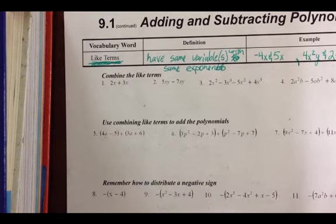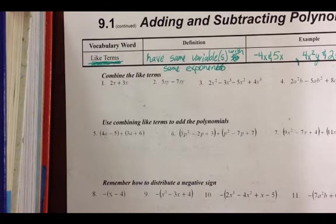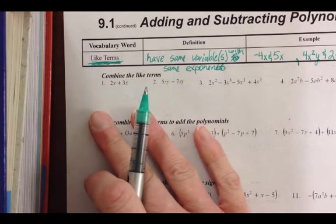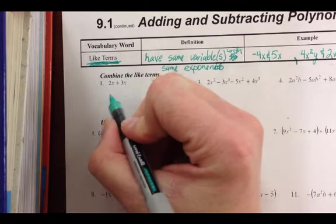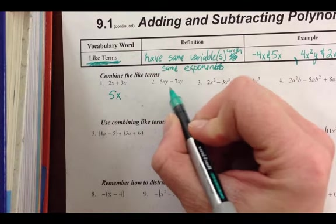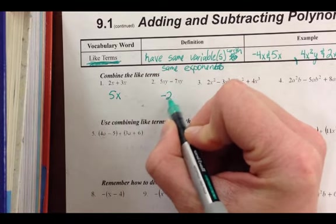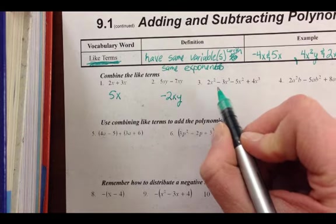So these first four problems are pretty easy. I think you can handle 1 and 2 on your own. I think I'm going to do 3 and 4 with you. I'll just put the answers down, because I think you already have them done. Those are like negative 2xy. Now let's go to this number 3.